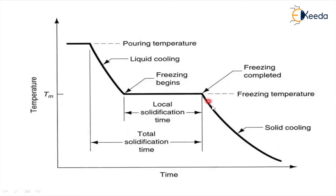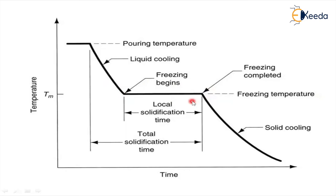After solidification, there is solid cooling, shown as a curve where the solid slowly cools further. This is about the solid cooling phase. The horizontal line observed in the cooling curve at the freezing temperature completely depends on the conditions under which the metal is cooled.